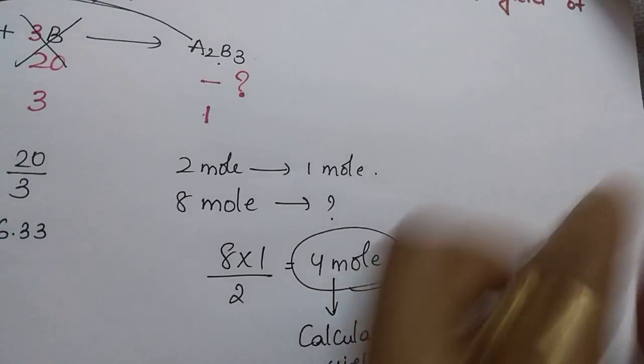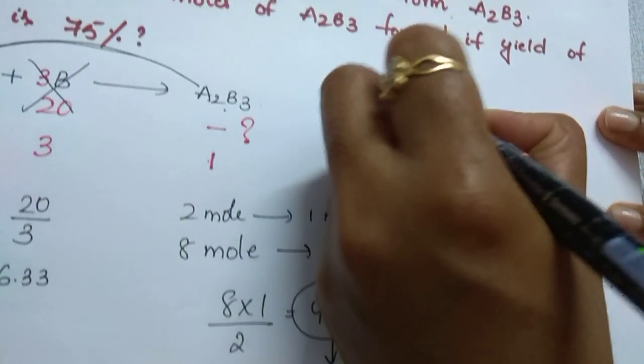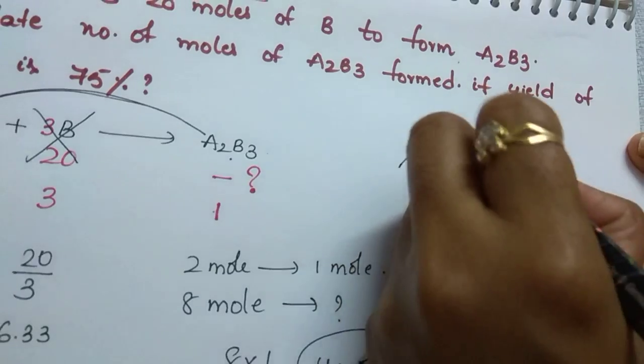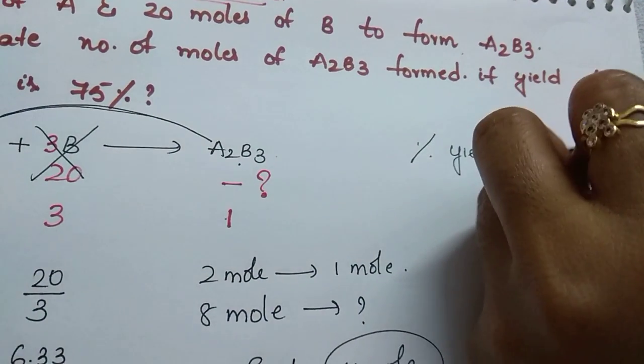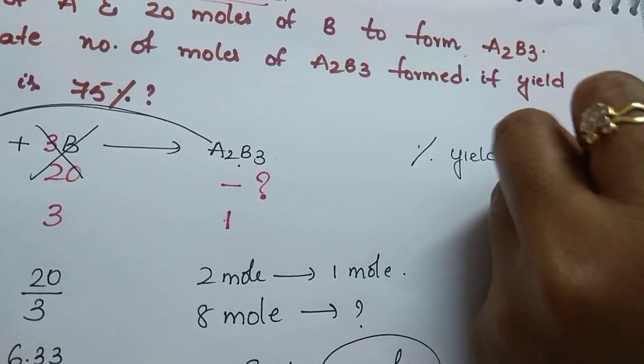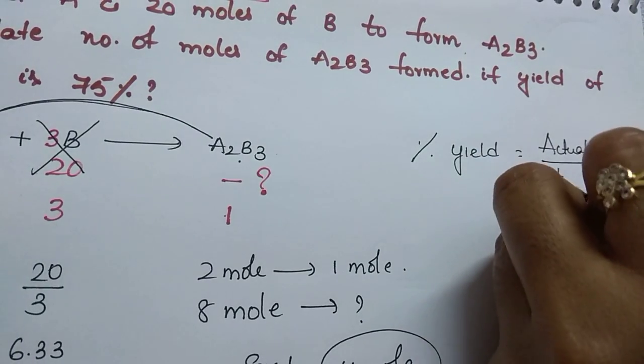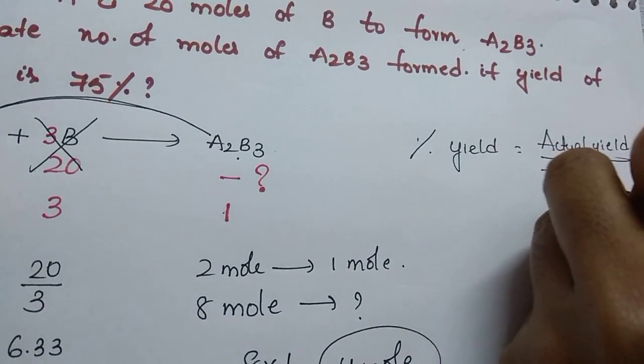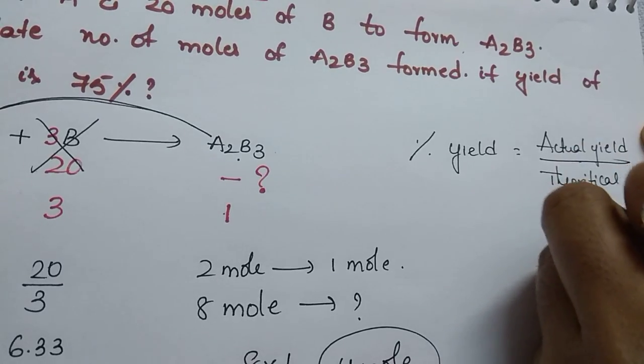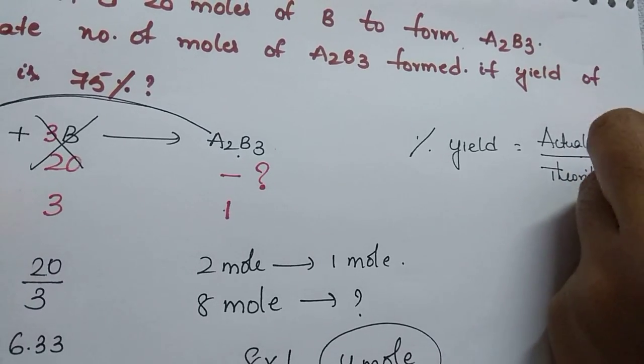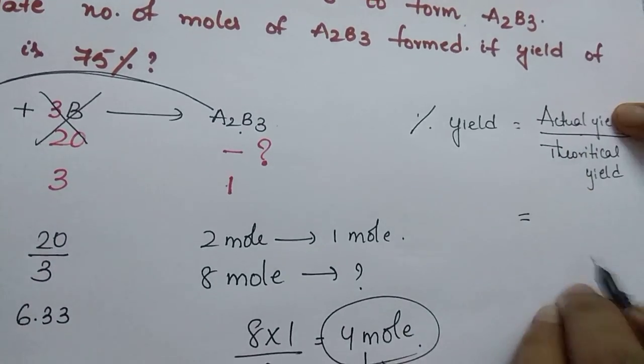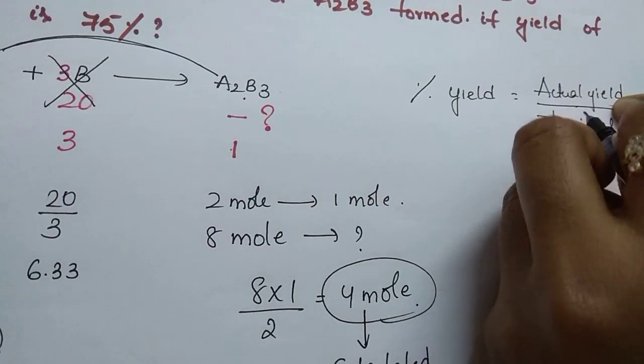What is our formula? Percent yield equals actual yield divided by theoretical yield multiplied by 100. The actual yield we have to find, let's call it x.